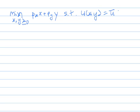So first we will derive the first order conditions for this problem by forming the Lagrangian L. L is the objective function p_x x plus p_y y appended with a Lagrange multiplier multiplying the constraint u bar minus u(x,y).